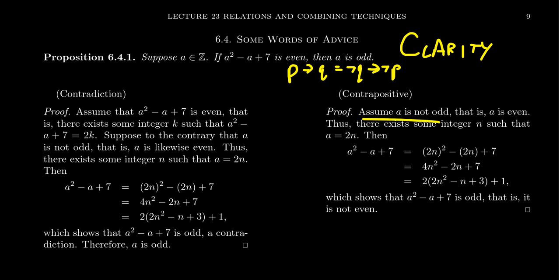So assume that a is not odd, that is, it's even. Thus, there exists some integer n such that a equals two n. Then we're going to plug this into a squared minus a plus seven. This gives us two n squared minus two n plus seven, which is four n squared minus two n plus seven, which is two times two n squared minus n plus three plus one, which then shows that a squared minus a plus seven is an odd number, which makes it not even.